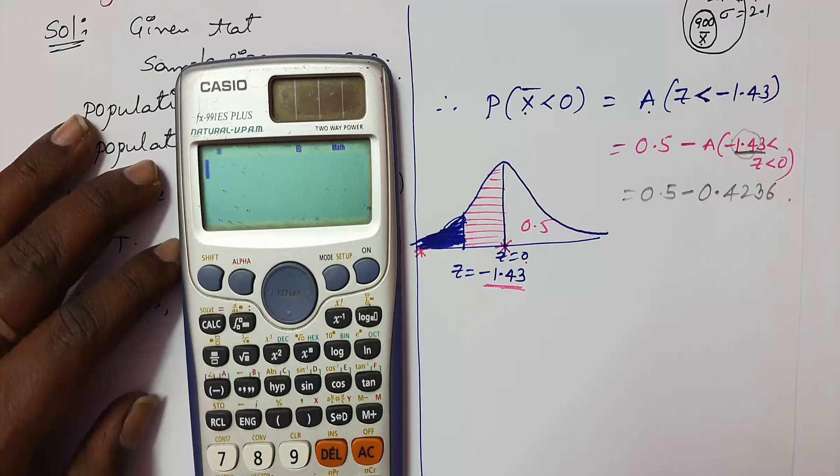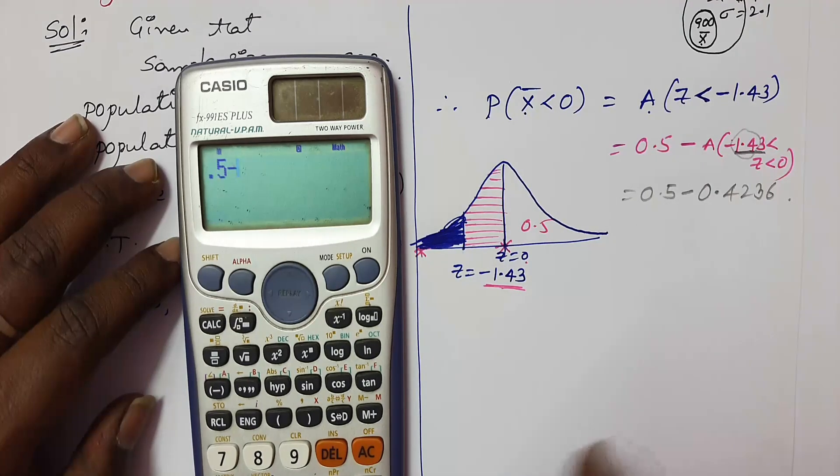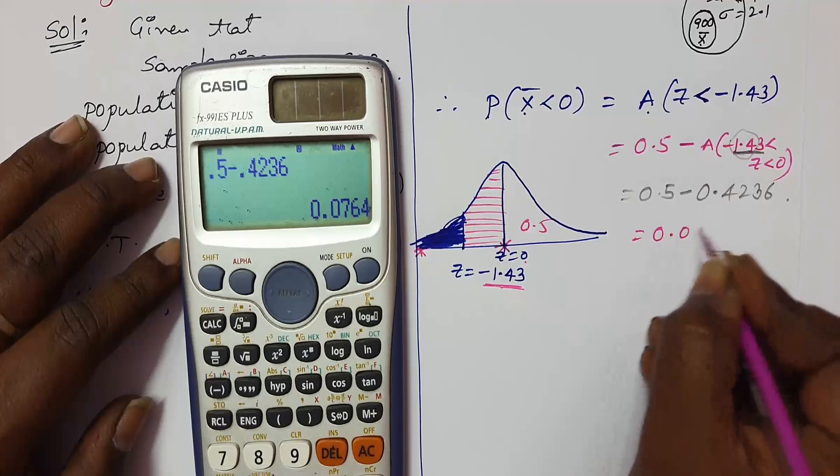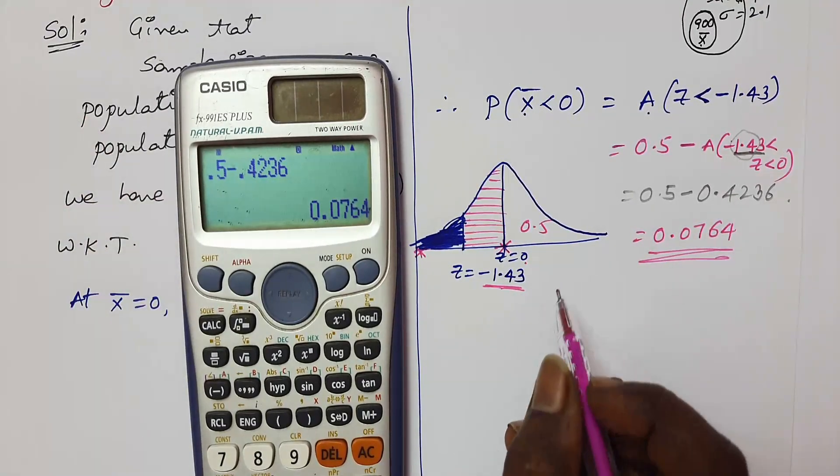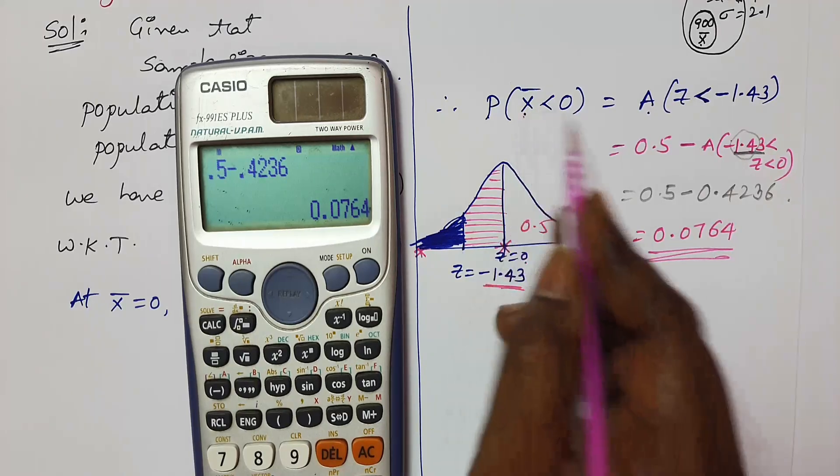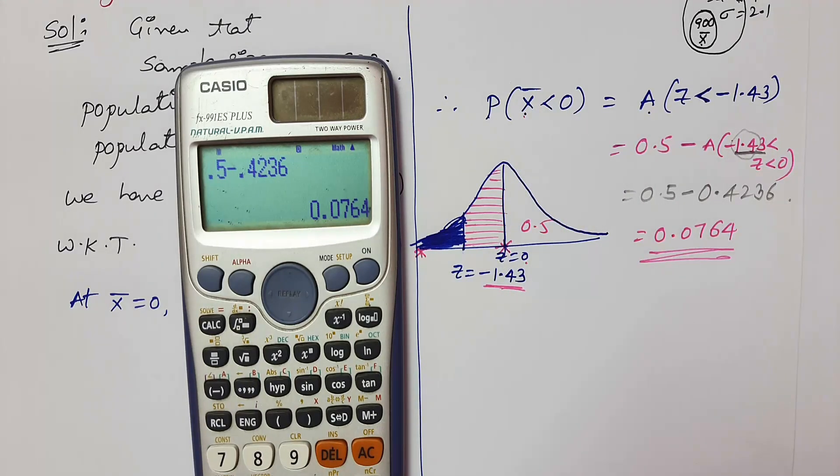0.5 minus 0.4236, I got 0.0764. This is the required probability that sample mean x̄ is negative. In the next video, I will give some more examples on this model. Thank you.